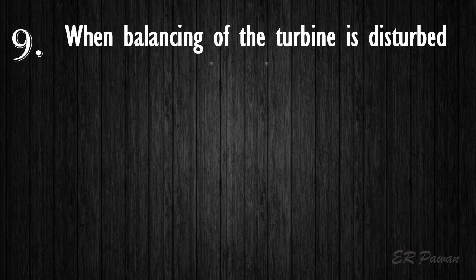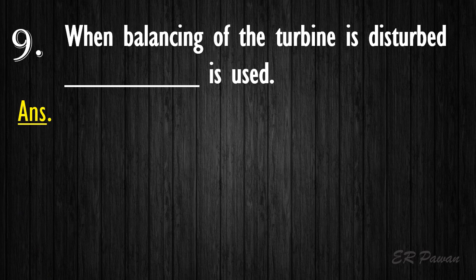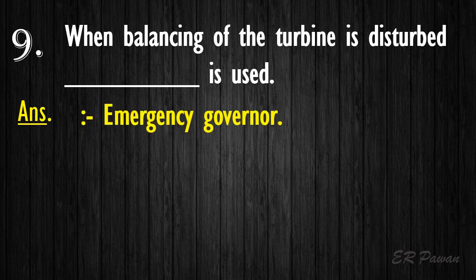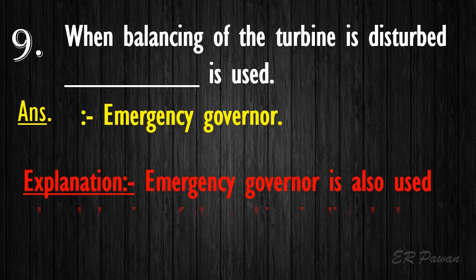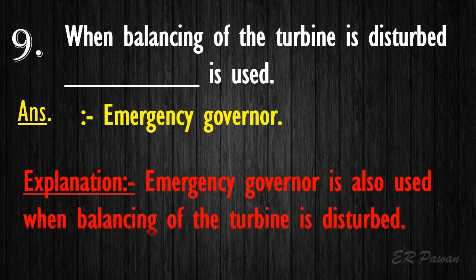Question 9: When balancing of the turbine is disturbed, emergency governing is used. The emergency governor is also activated when balancing of the turbine is disturbed.